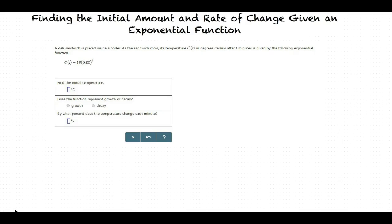Find the initial temperature and determine whether the function represents growth or decay. Also, by what percent does the temperature change each minute? Let's first determine the values of a and b. In this problem, a equals 19 and b equals 0.88.